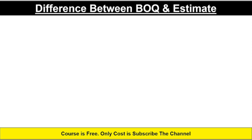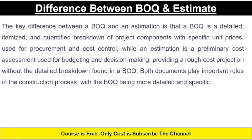Now we will see the difference between BOQ and estimation. The key difference is that a BOQ is a detailed, itemized, quantified breakdown of project components with specific unit prices, used for procurement and cost control. An estimation is a preliminary cost assessment used for budgeting and decision making, providing a rough cost projection without the detailed breakdown found in a BOQ. Both documents play important roles in the construction process, with the BOQ being more detailed and specific.